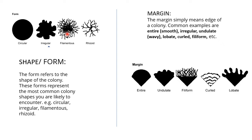After shape you have to report the margin, which simply means the edge of the colony. Common examples of margins are: entire — a smooth edge; irregular; undulate — which is wavy; lobate — meaning lobes; curled; and filiform. Undulate means there are wave-like structures present.